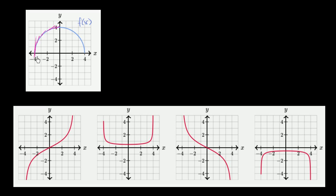This one looks like it's coming from negative infinity and getting less and less negative — that doesn't meet our constraints. This one looks like it is coming from positive infinity and getting less and less positive, so that seems OK. This one has the same property — it's getting less and less positive. This one starts very negative and gets less and less negative, so we can rule that out.